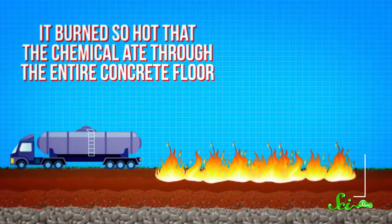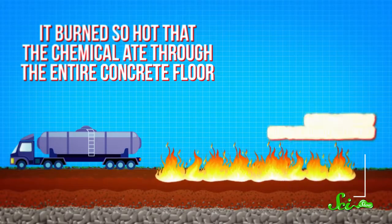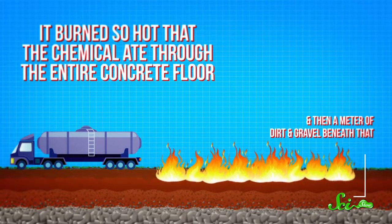In the early 1950s, the first time that US scientists tried to ship chlorine trifluoride in bulk, the steel tank cracked and a full ton of it spilled out. It burned so hot that the chemical ate through an entire concrete floor, and then a meter of dirt and gravel beneath that.